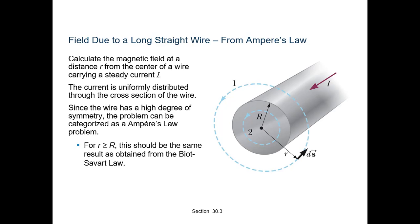Ampere's Law has several applications. It is possible to choose a loop — called the Ampere loop — such that at each point of the loop, B is either tangential to the loop with non-zero constant magnitude, or normal to the loop, or vanishes. Let L be the length of loop where B is tangential, and I be the current enclosed by the loop; then the equation reduces to B·L = μ0·I.